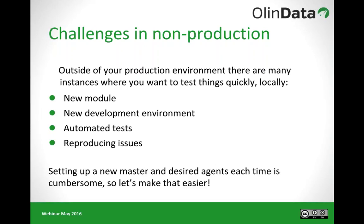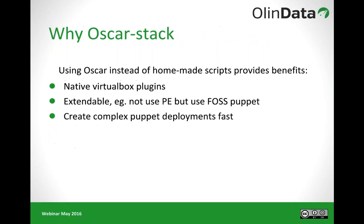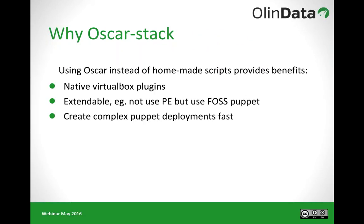In short, setting up a new master and one or more agents is quite a bit of a task, so with automation this can be made quite a bit easier. For that there's Oscar. It's basically a set of Vagrant plugins — quite extendable, so you can easily add things on top of it. It's not necessarily only for Puppet Enterprise; you can use open source Puppet if you hack around a little bit, and it allows you to create more complex Puppet deployments quite fast.